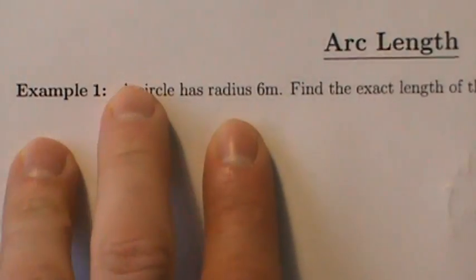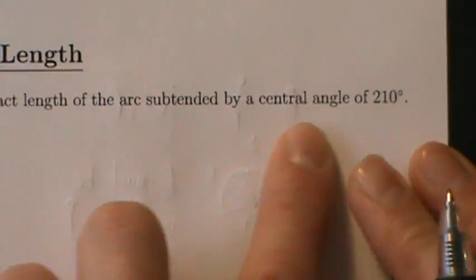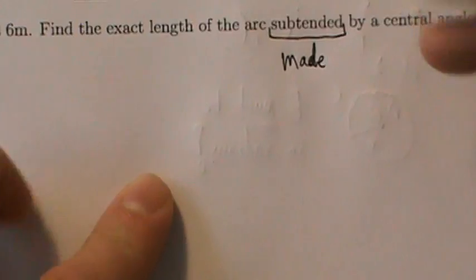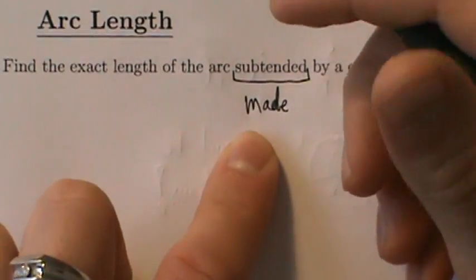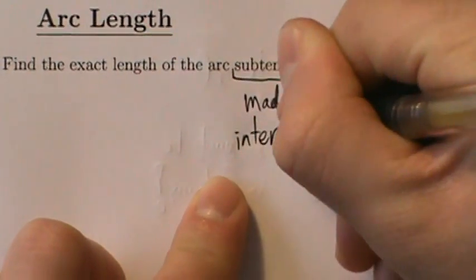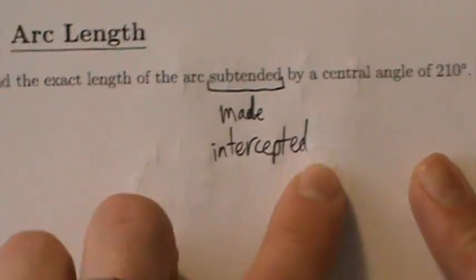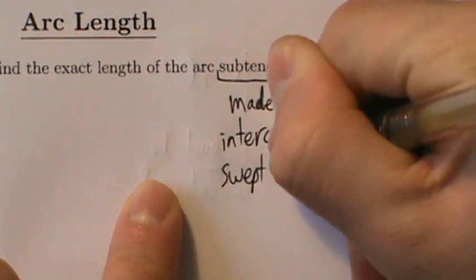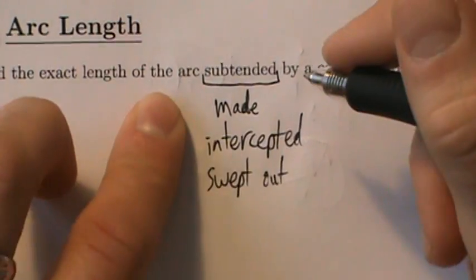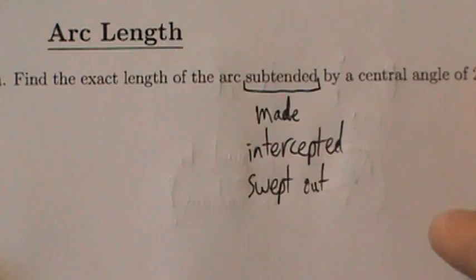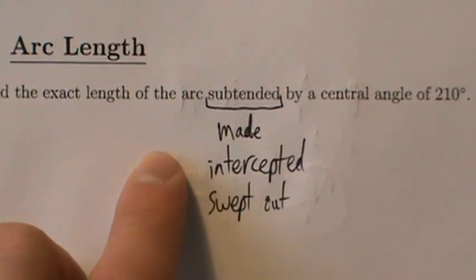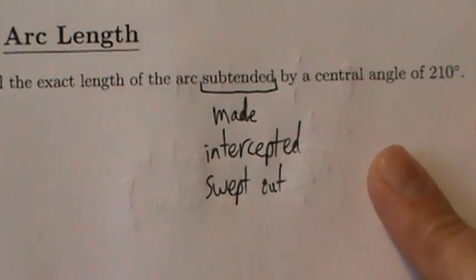Let's do example one. A circle has radius 6 meters. Find the exact length of the arc subtended by a central angle of 210 degrees. Note that there are other words that could be used here — 'made by,' 'intercepted by,' or 'swept out by' a central angle — but they all mean the same thing in this context. The math is going to be exactly the same regardless of which word is used.